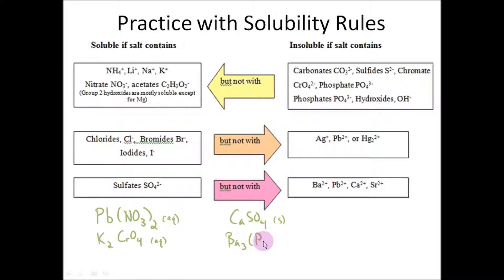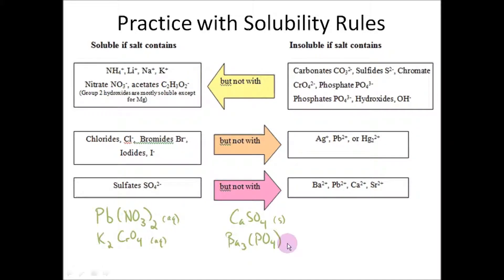Let's do barium phosphate. Again, let's start with the anion. Phosphates tend to be insoluble — usually insoluble. Following the arrow over, barium phosphate would be insoluble, but it would be soluble if bonded to any of these cations: ammonium, lithium, sodium, or potassium. I don't see barium listed here, so in this case we've got another insoluble compound.